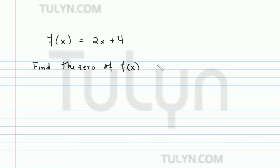To find the zero of f(x), what we have to do is solve f(x) = 0. That's what's called the zero of the function f(x).